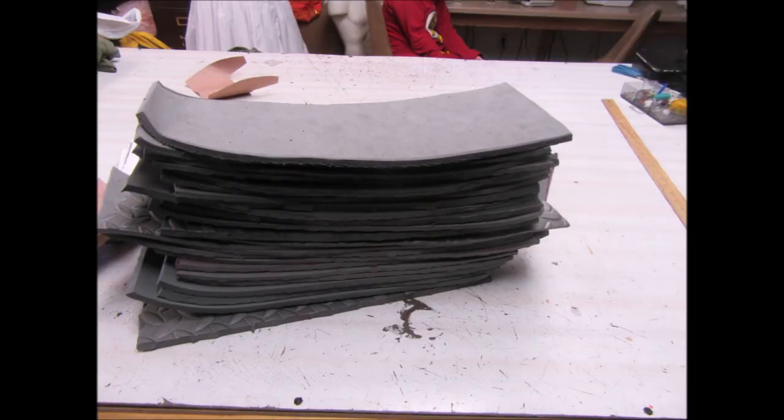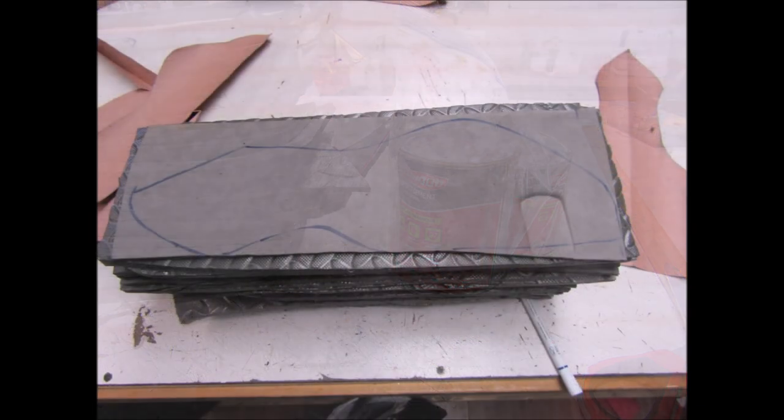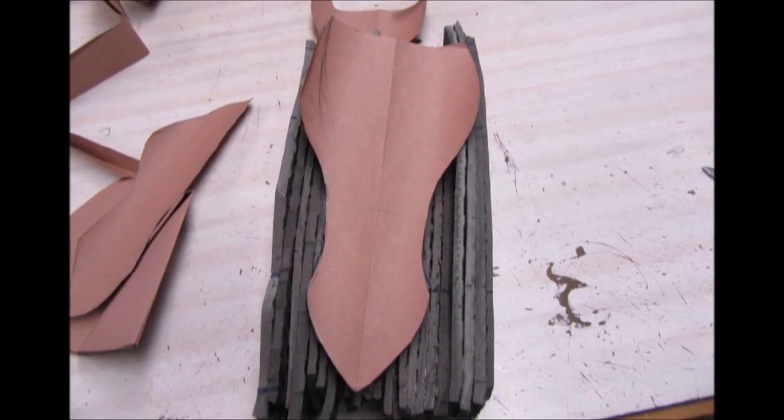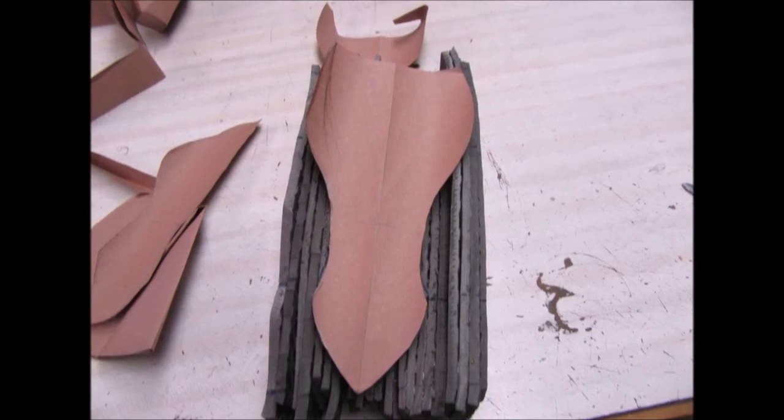I cut a ton of rectangles to the size I needed and contact cemented them together, held them in place with a clamp, and waited 24 hours for my brick to set. The next day, I came in and traced my two patterns onto the block. I didn't trace my ears because I figured they'd be easy enough to add on later instead of carving them out.